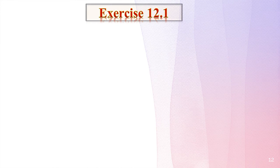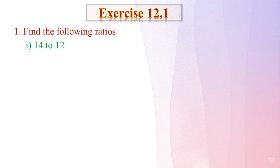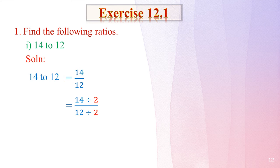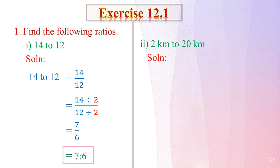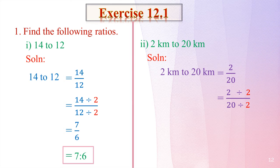Exercise 12.1 — Find the following ratios. First: 14 to 12. Write as fraction 14/12, common factor is 2, divide to get 7/6, so the ratio is 7 is to 6. Second: 2 kilometres to 20 kilometres. Write as fraction 2/20, common factor is 2, divide to get 1/10, so the ratio is 1 is to 10.